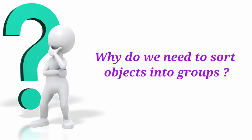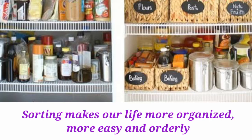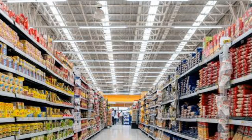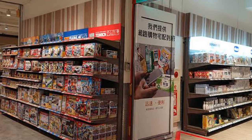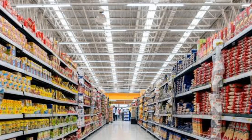Now the question is, why do we need to sort things into groups? Sorting makes our life more organized and very easy. In a supermarket, there are separate sections for items of different types — you will find food kept in one section, stationery in a separate section. So arranging things in different groups makes it easier for us to find the items according to our need. Sorting makes our life more organized and more comfortable.